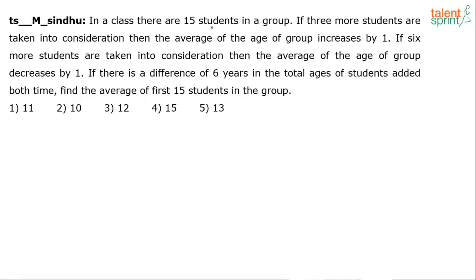Look at this. It says: in a class there are 15 students in a group. If three more students are taken into consideration, then the average of the age of the group increases by one. If six more students are taken into consideration, then the average of the age of the group decreases by one. If there is a difference of six years in the total ages of students added both times, find the average of the first 15 students in the group.